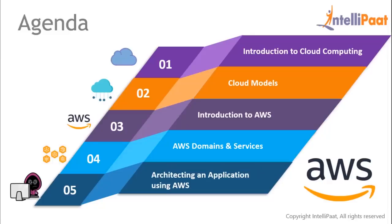We're going to follow a top-down approach, starting with an introduction to cloud computing, then the various cloud models that companies operate on. After that, I'll introduce you to what AWS is and how it fits in the storyline. Then I'll cover the various domains and services AWS has to offer, based on which companies have made AWS the number one cloud provider in the world. Finally, I'll show you an application on my local computer and how you can architect its infrastructure on AWS.